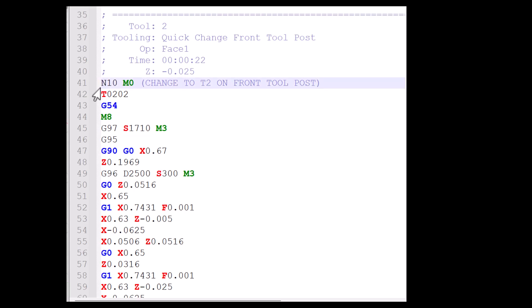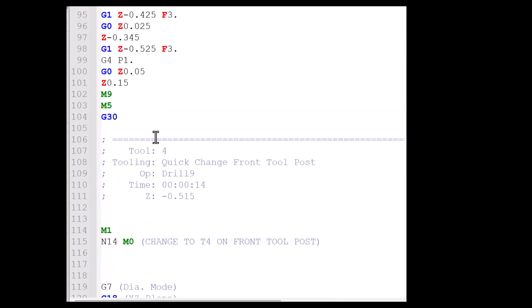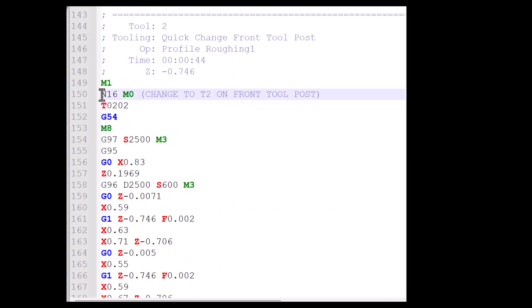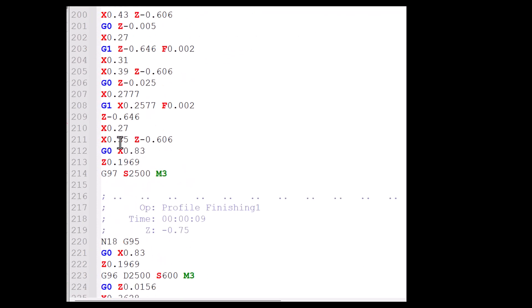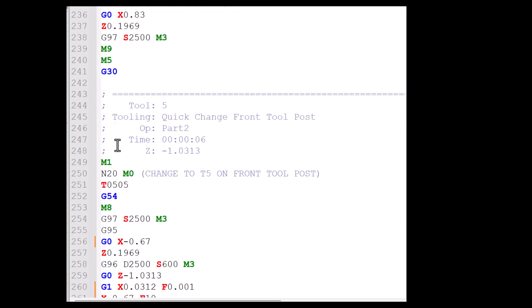So I then commented out all the M0 stop command control lines at the beginning of each tool change. These code lines begin with the line code N10 and 12 and 14 and 16 and 18. After commenting out all these G-code lines, the system ran perfectly with no stop in between tool changes.